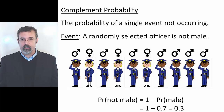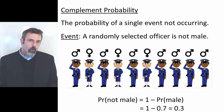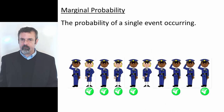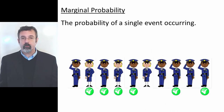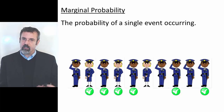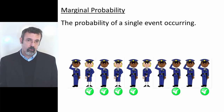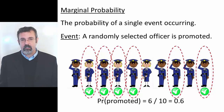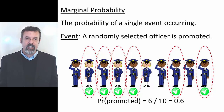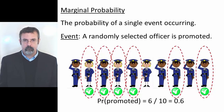The complement probability is 30%. Now suppose that 6 of these 10 officers are promoted. We can define another event, which is that we randomly select an officer who has been promoted. The probability of randomly selecting an officer who has been promoted is 6 out of 10, or 60%.